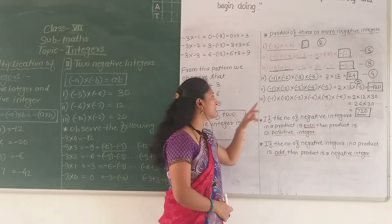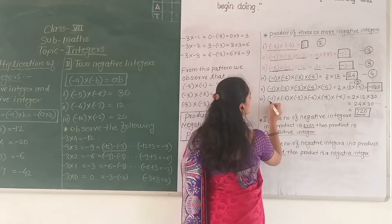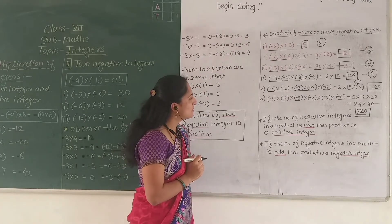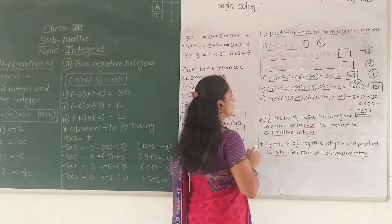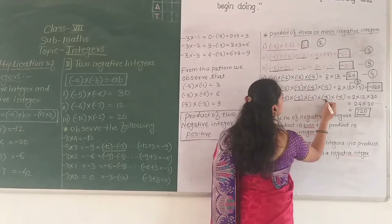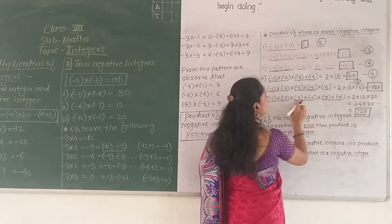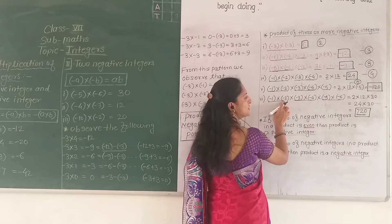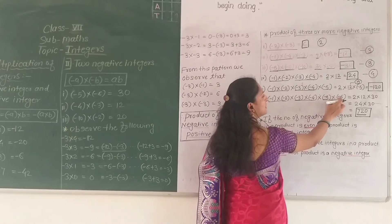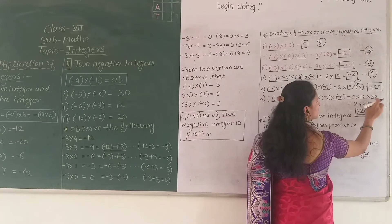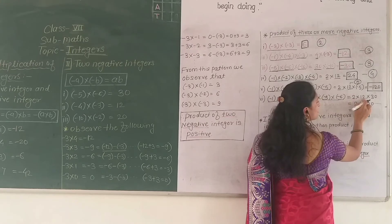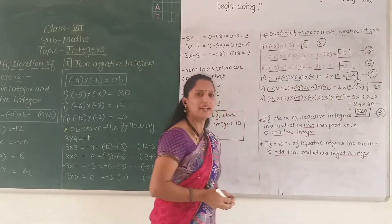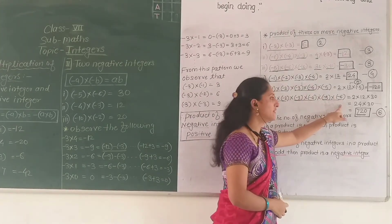Now the sixth example has six negative integers. We make pairs of two. Negative 1 into negative 2 is 2. Negative 3 into negative 4 is 12. Negative 5 into negative 6 is 30. All pairs give positive results — negative into negative is positive. So all numbers are positive. Product of these is 2 into 12 into 30 — that is 24 into 30 — which equals 720. Product of six negative integers is positive.